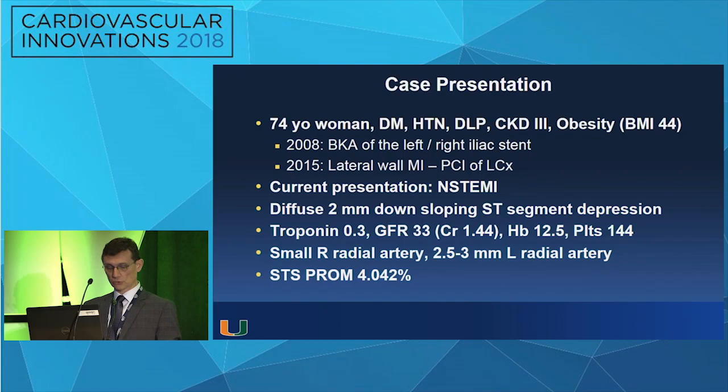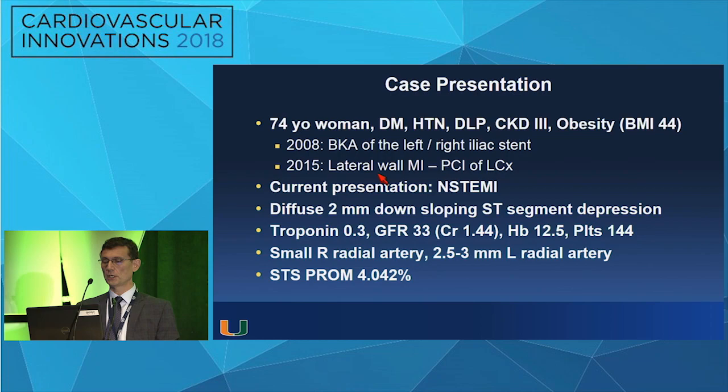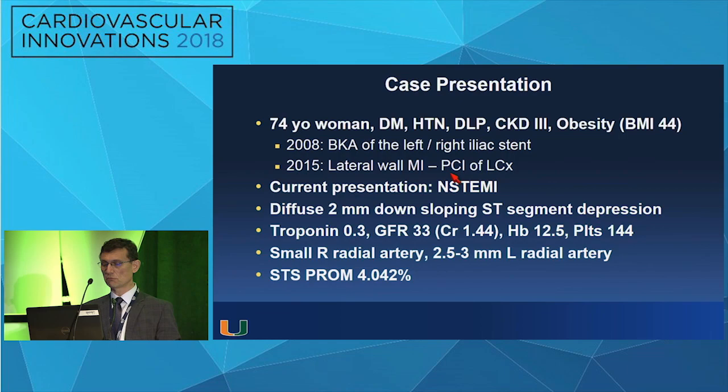We're going to talk about left main intervention. I always like to illustrate these lectures with a case. This is a 74-year-old referred to us from the west coast of Florida with diabetes, all the comorbidities, one amputation in the left leg, and right heel involvement. She had a lateral wall MI in the past with previous PCI to the circumflex. She presented with a non-STEMI, EKG changes, positive troponins, and CKD with a GFR of 33.